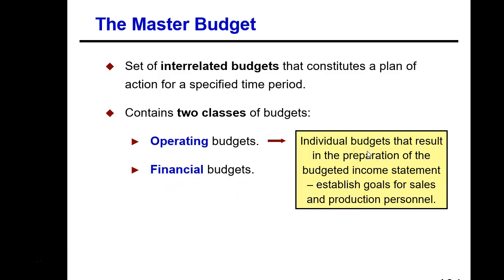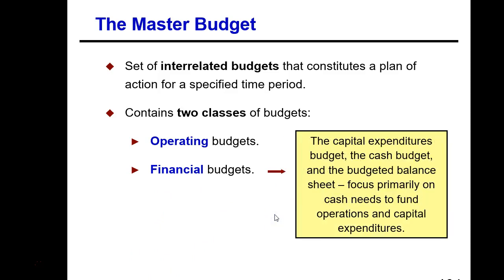With the operating budgets, these are individual budgets that result in the preparation of the budgeted income statement. We'll look at budgets such as our sales budget, production budget, overhead budget, and material budget — they're going to all be combined to prepare a budgeted income statement. Then with our financial budgets, we'll look at the capital expenditure budget, the cash budget, and the budgeted balance sheet.